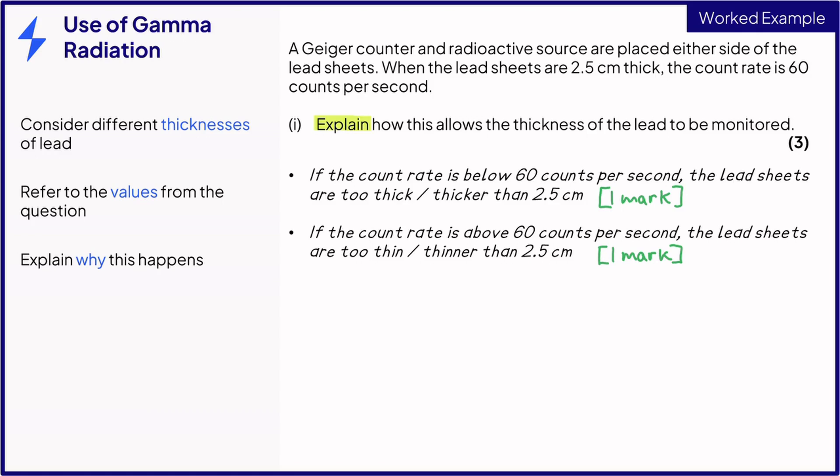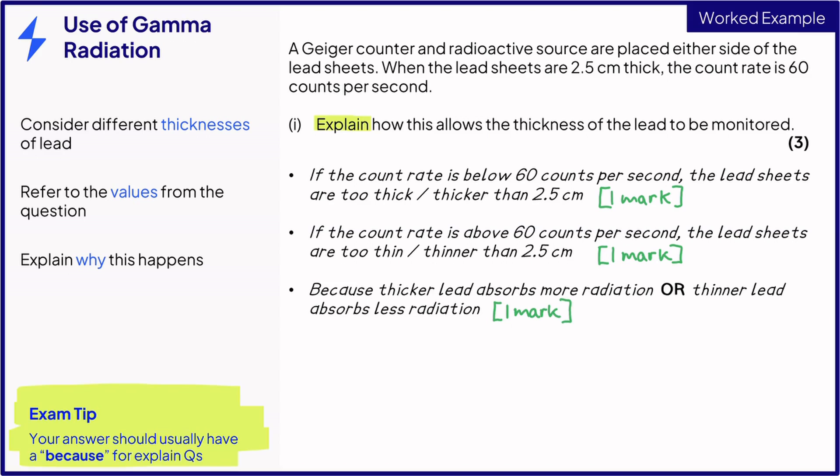Also, remember, this is an explain question. These count rates change because thicker lead absorbs more radiation. You can say the opposite, either will get you that third mark. A good rule of thumb for explain questions is to have phrases like, this happens because, or which is a result of, to back up your statements.